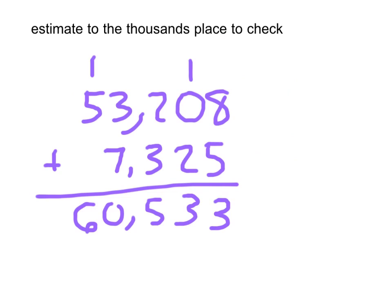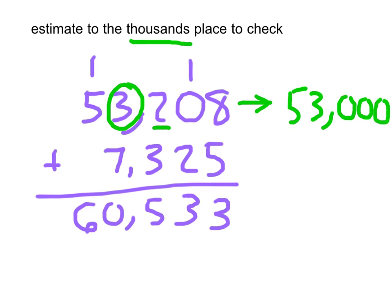All right, I have another problem here. I figured out the exact answer for you. And then we're going to estimate to the thousands place to check. What digit is in the thousands place? The 3 is in the thousands place. If we look at 53,208, we've got 0 to 4, place value stays the same. So you've got 53,000 for that. And 7,325, digit in the thousands place is the 7, and that digit is also going to stay the same.